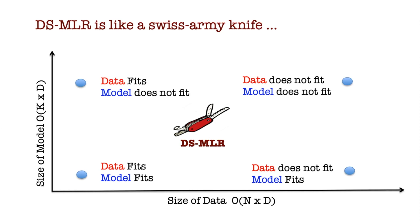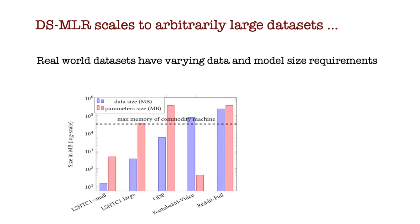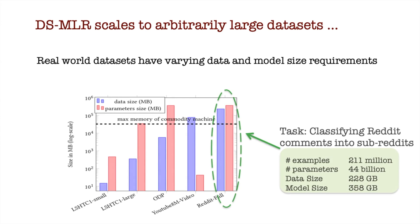Our experiments consider datasets covering all scenarios we described earlier. In particular, we created RedditFull, a large multi-class classification dataset using Reddit comments spanning a period of 9 years. While the data itself occupies 228GB, the model requires an additional 358GB. This is a scale where both data and model need to be partitioned simultaneously. In other words, hybrid parallelism is the way to go.